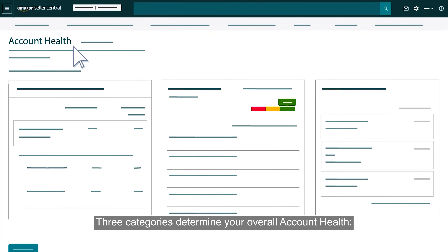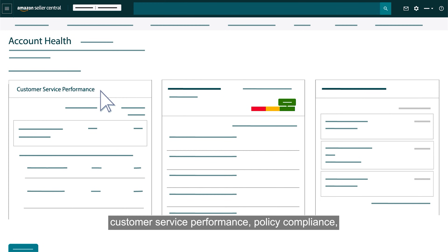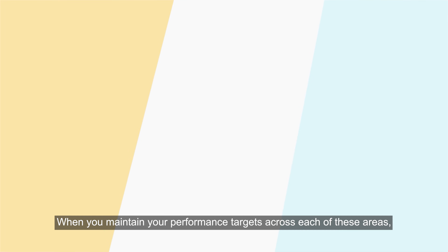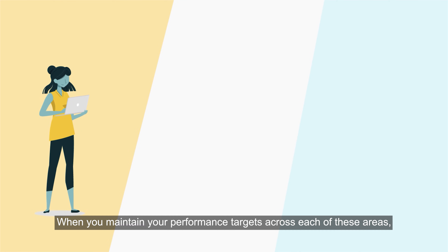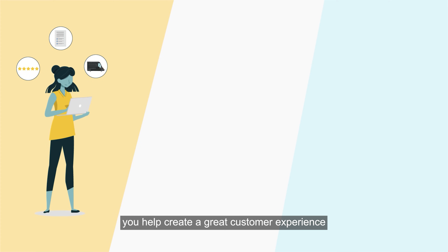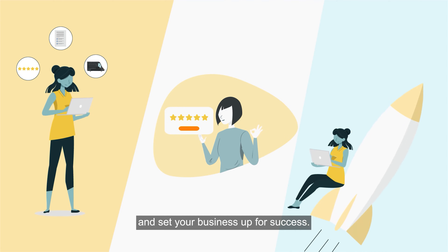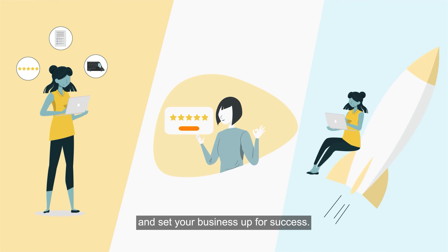Three categories determine your overall account health: customer service performance, policy compliance, and shipping performance. When you maintain your performance targets across each of these areas, you help create a great customer experience and set your business up for success.